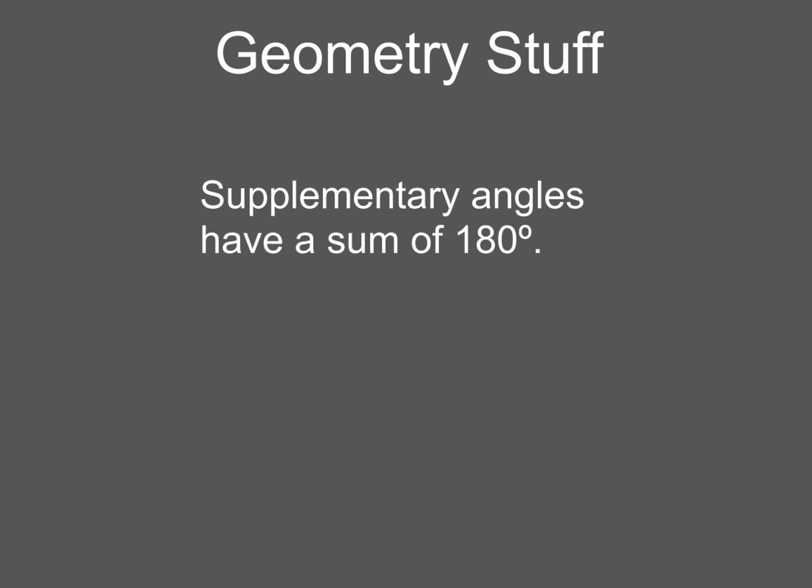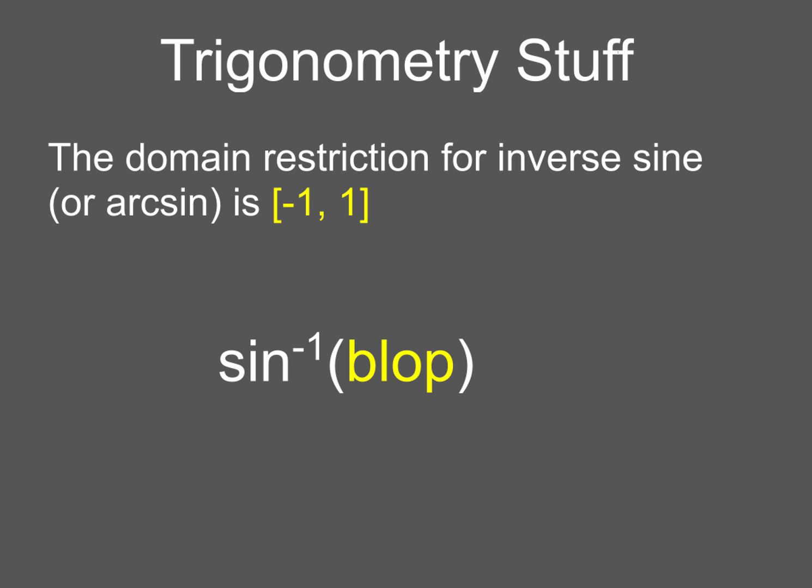Now there's going to be a third thing you're going to have to remember, and that's that the domain restriction for arc sine or inverse sine is going to be between negative 1 and 1. So when you see these symbols, arc sine of blop, that blop, whatever is in that blop, that piece has got to be between negative 1 and 1. So that's some of the old stuff we're going to have to pull into account here and make sure we remember as we work through some of these problems.